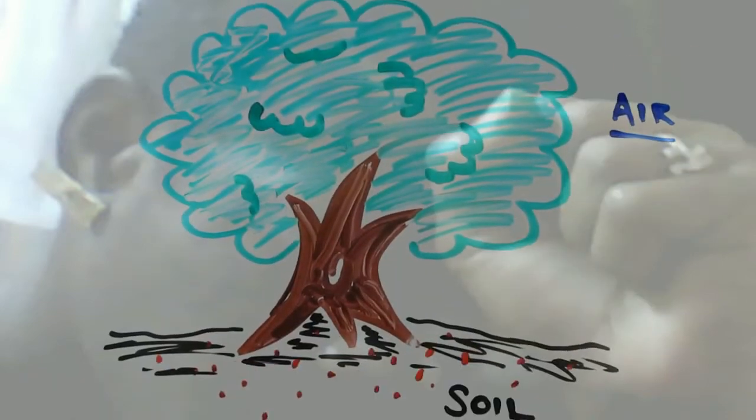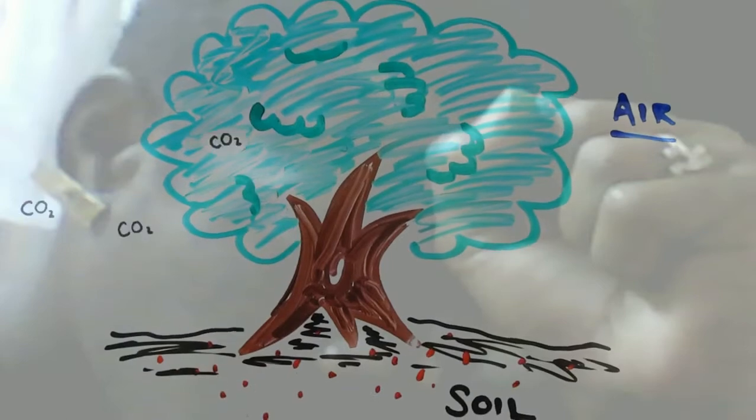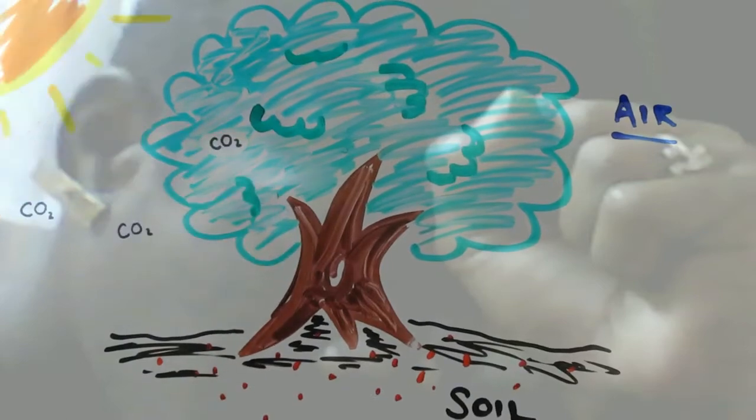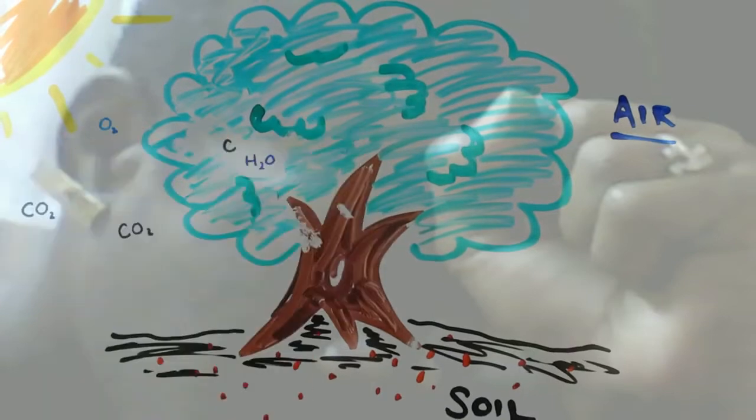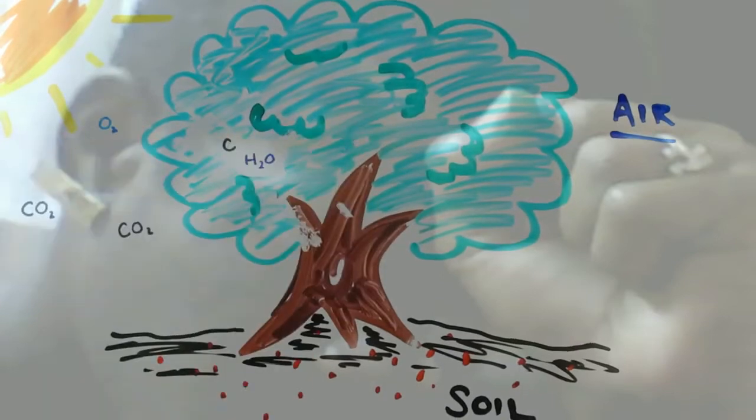Trees? They actually grow out of the air, not the ground. Though they receive some minerals from the soil, the carbon dioxide from air goes into the tree, and with the help of the sun removes the oxygen. This carbon is left with water to create the substance of the tree.